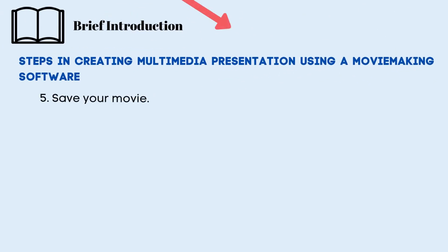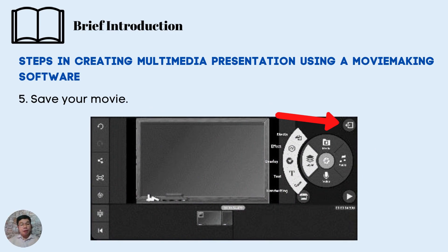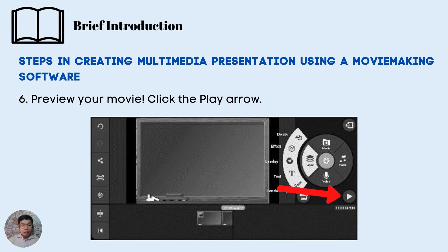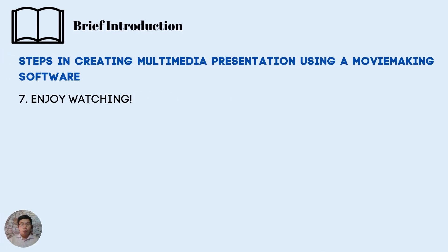Let us move forward to the fifth step. Once you have finished adding graphics, pictures, text, and background music, it is time to save your movie. This is the most important step — because if you forget to save, everything you worked on will be lost. Be sure to save your movie by clicking the export icon. Then, after you save it, click the play arrow to preview your movie and see how it looks. If you think something needs to be changed, edit it to improve the final output. Once you are done, save it again and enjoy watching your own movie.